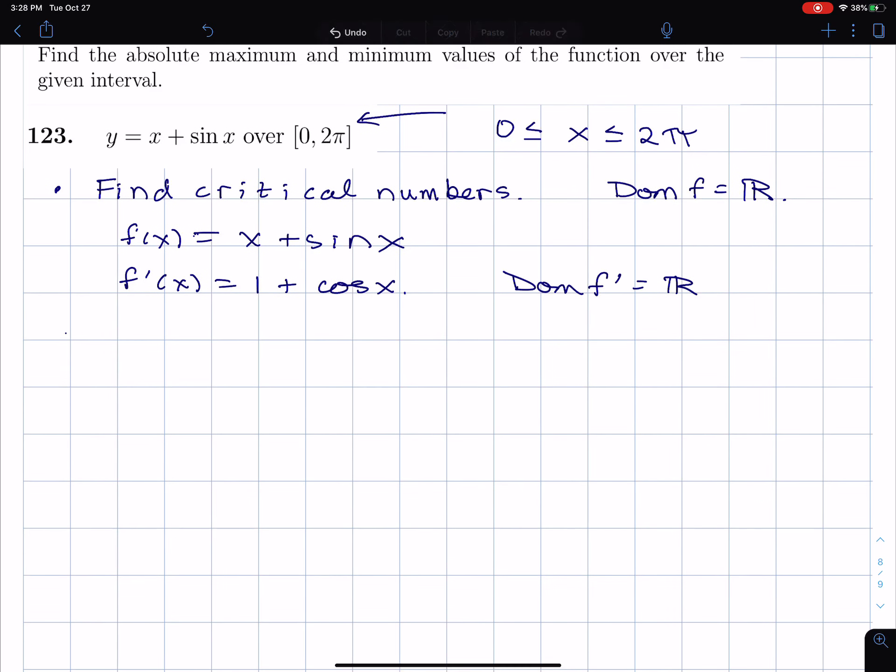All right, so then what we're going to do is, finding the critical number, is we're going to solve f prime of x equals 0. So that's another type of critical number where the derivative is equal to 0. And essentially, that means that the function will have a horizontal tangent line at that critical number if the derivative is equal to 0. So I have 1 plus cosine x equals 0. Cosine x equals negative 1. So apparently, when cosine x equals negative 1, we have a horizontal tangent line.